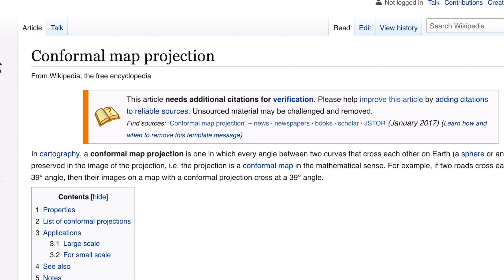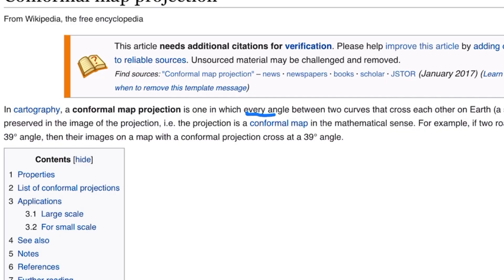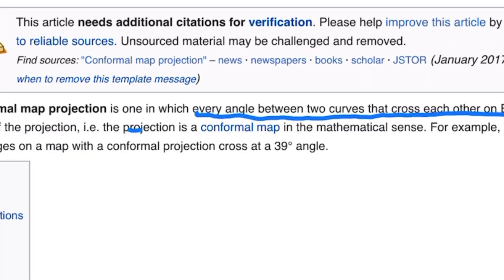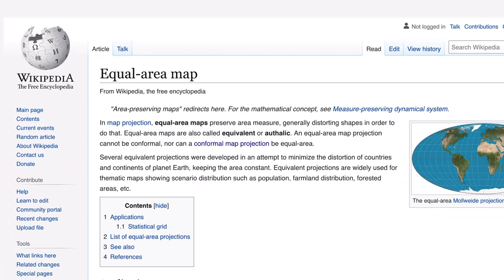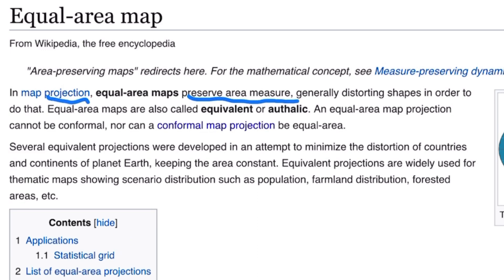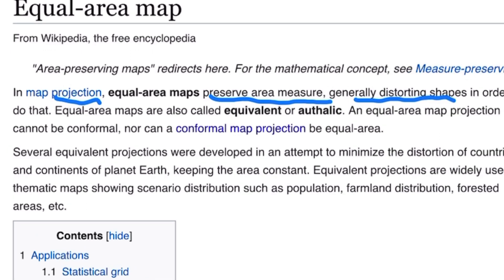The first is the conformal map projection. So in this case, every angle between two curves that cross each other on the earth is preserved. So the projection is conformal in the mathematical sense, but that comes at the cost of the equal area map. So this map projection preserves equal area and it does that generally by distorting land masses to keep the overall size correct. And to prove my point, an equal area map projection cannot be conformal, nor can a conformal map be equal area.